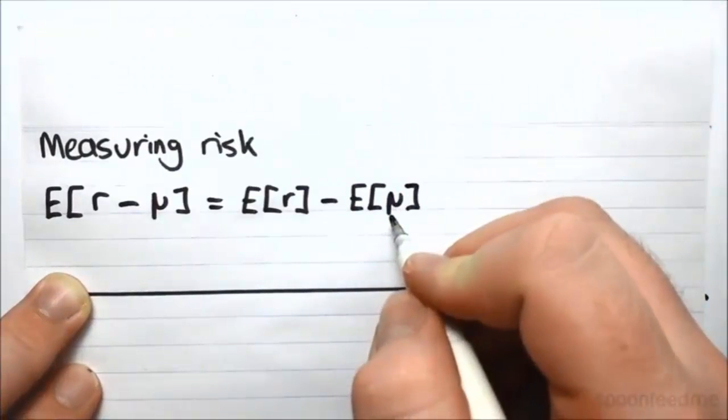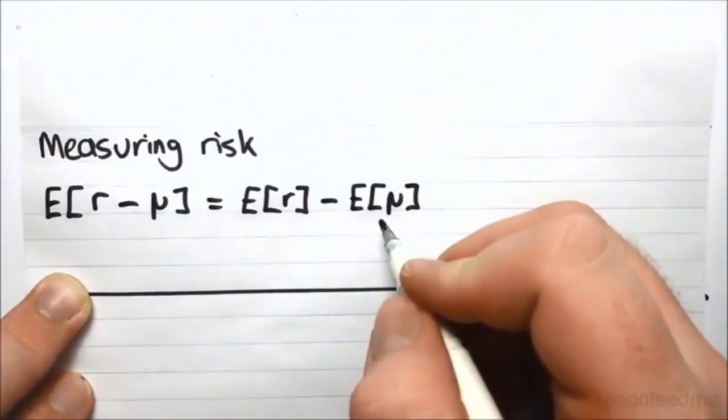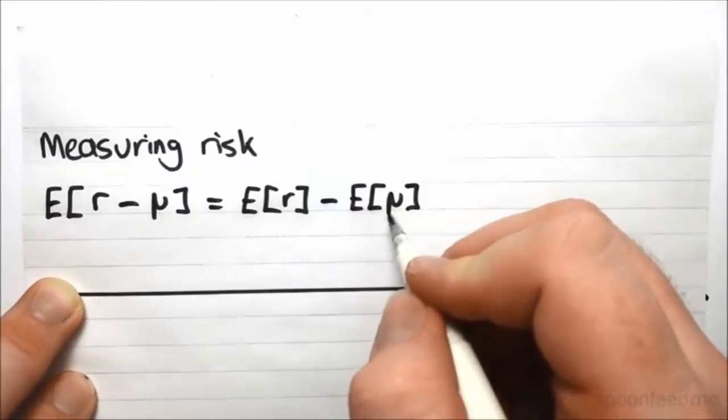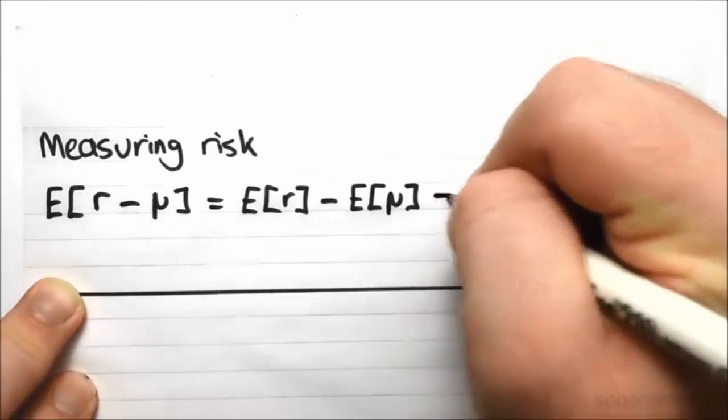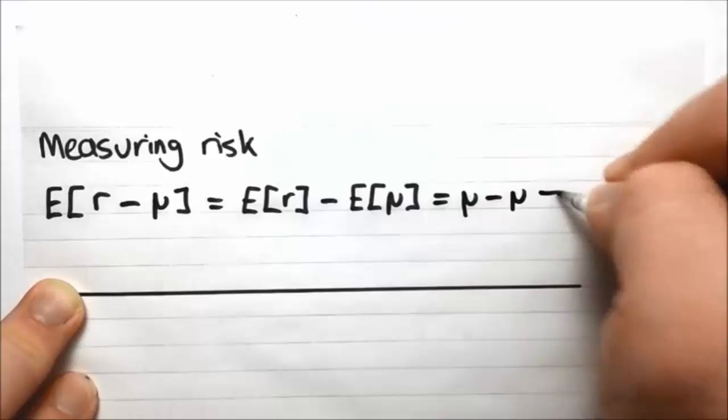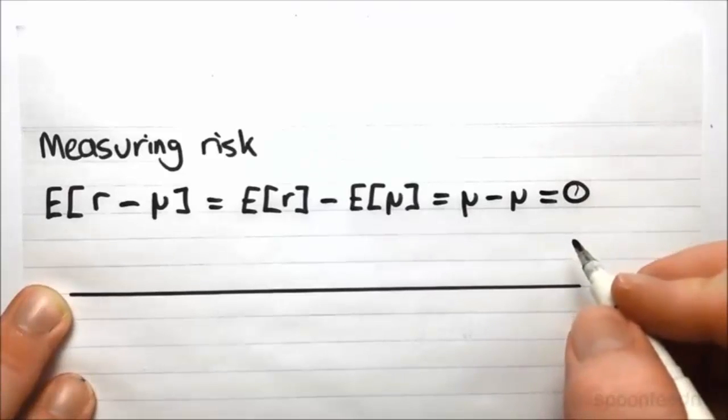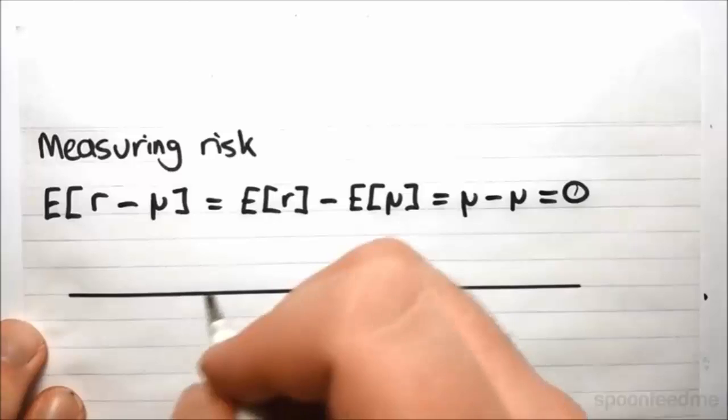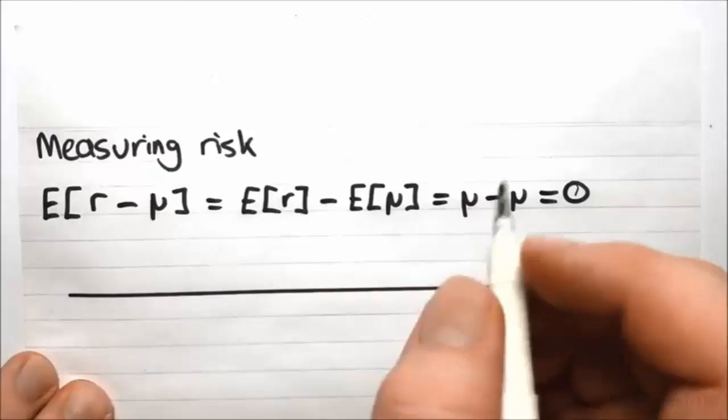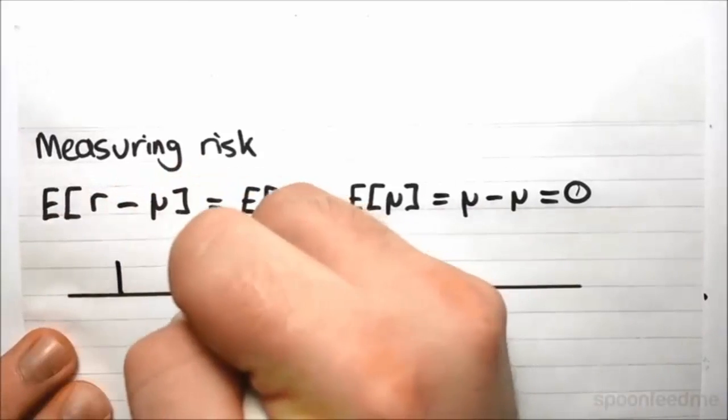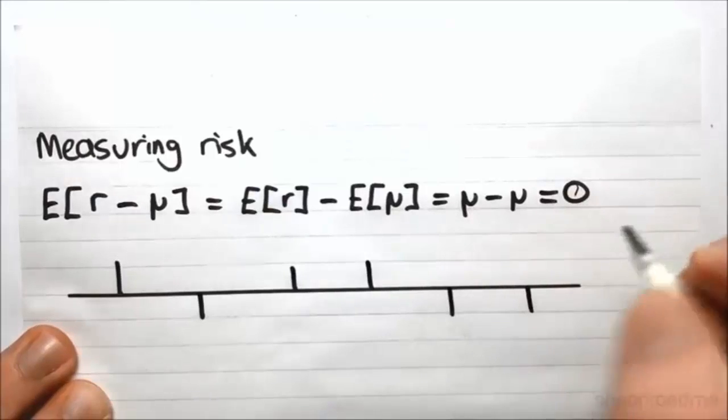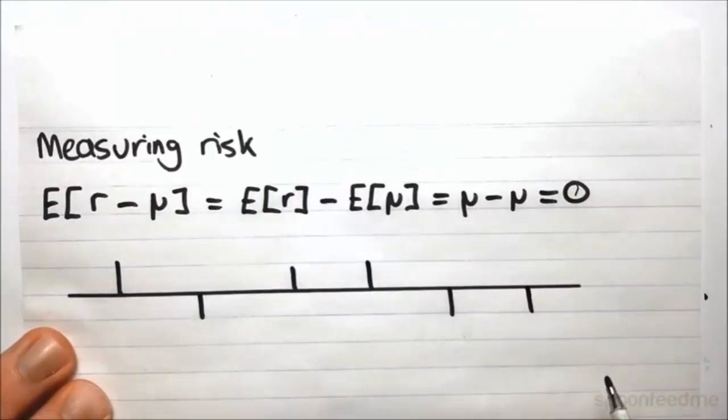Except it turns out this becomes equal to the expected value of R minus the expected value of mu. Now mu being what we denote as the expected value, that's just a constant number. The expected value of a constant is just itself. This becomes mu minus mu, which equals zero. So this tells us absolutely nothing. It's really pointless. Because what it turns out to be is that it's a weighted sum of a bunch of positive and negative numbers, like so, and they all cancel each other out.